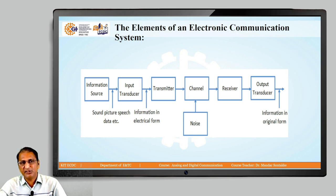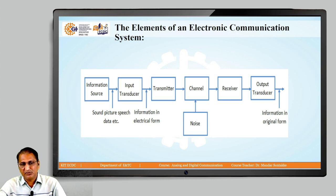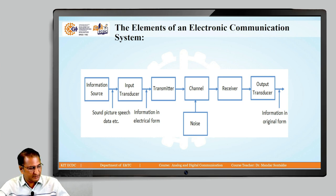Next, the signal is given to the receiver. The receiver is exactly the opposite of a transmitter, and we get the signal to the output transducer and receive the information in its original form. This is the general block diagram or general information of a communication system.